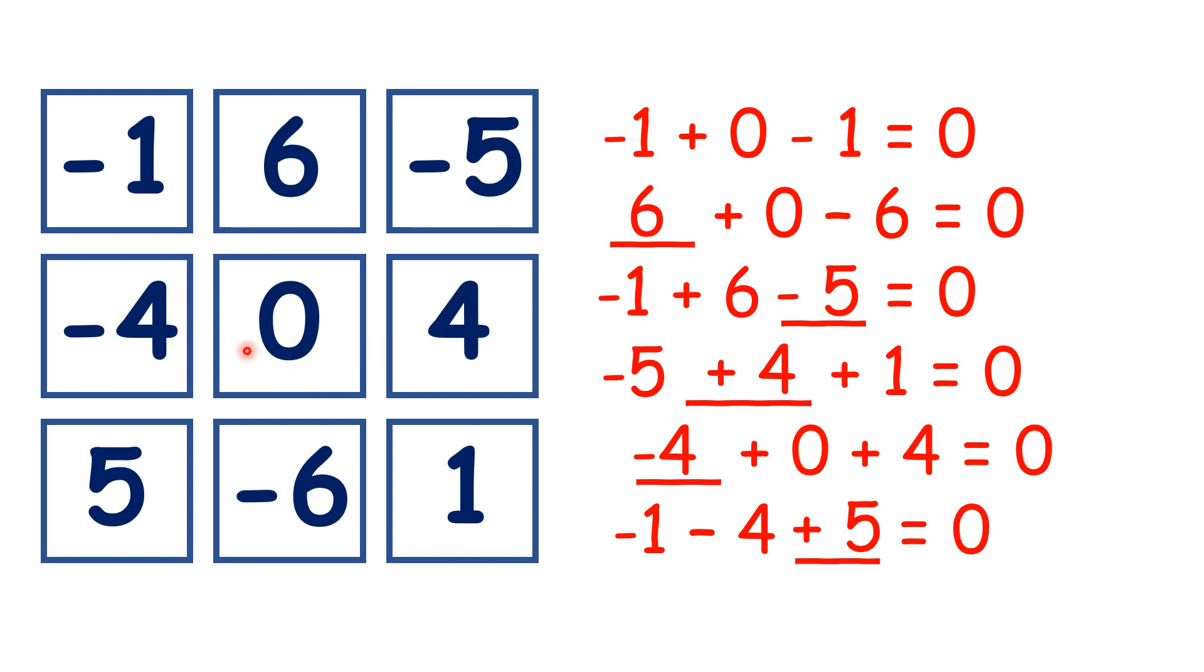So for this middle row, we have minus 4 and 4 either side of 0. For this middle column, we have 6 and minus 6. For this diagonal, we have 5 and minus 5. And for this diagonal, we have minus 1 and 1.